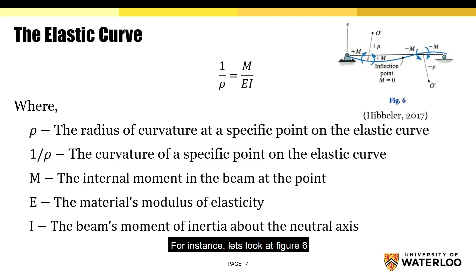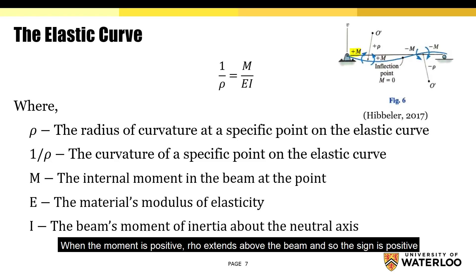For instance, let's look at figure 6. When the moment is positive, ρ extends above the beam, and so the sign is positive. However, when the moment is negative, ρ extends below the beam, and so the sign is negative.